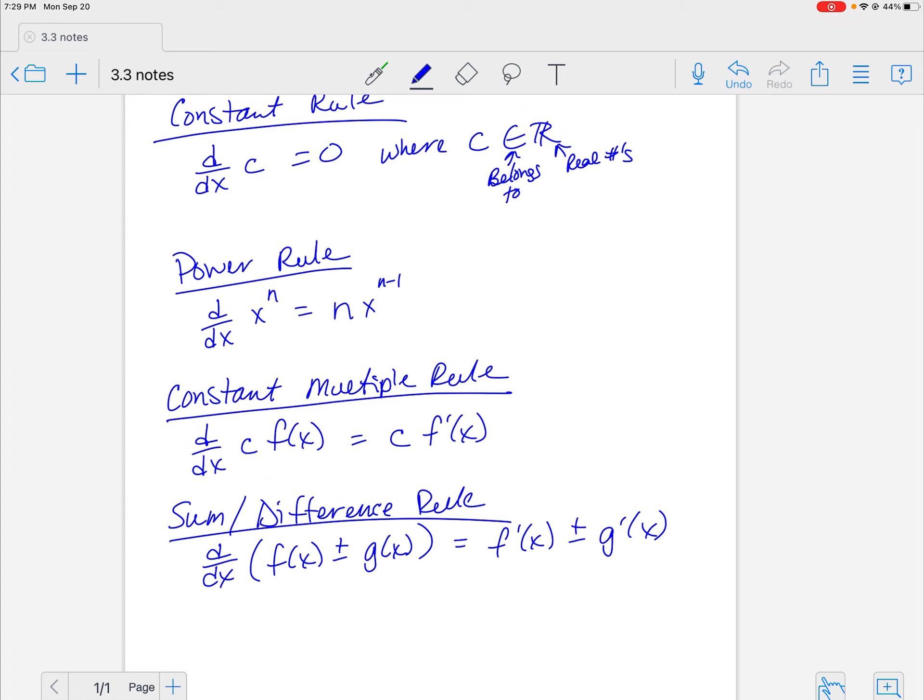So there's our basics. The constant, the derivative of a constant is always zero. The power rule, which you're going to use and it's going to be like breathing to you. Bring it in front, subtract one from the exponent. The constant multiple just stays in front, and sum or difference, we're just going to take the derivative of each term and then add or subtract those.